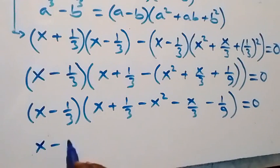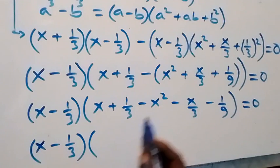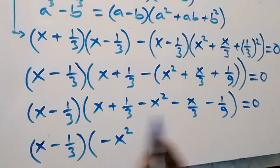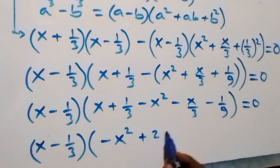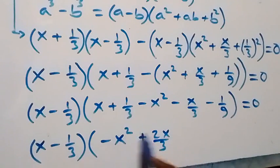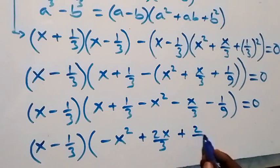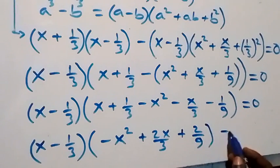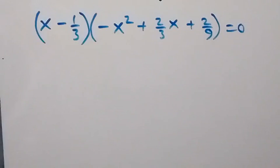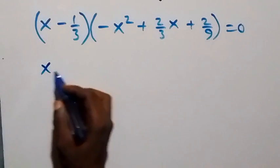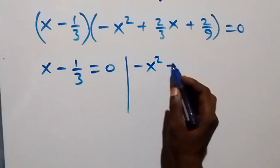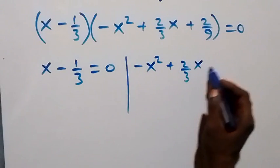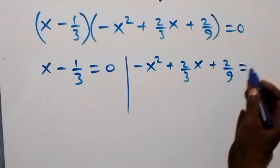Rearranging, we have (x − 1/3) times bracket (−x squared + 2/3 x + 2/9), close bracket, equals zero. From here we have two possible cases: either x minus 1 over 3 equals zero, or minus x squared plus 2 over 3 x plus 2 over 9 equals zero.